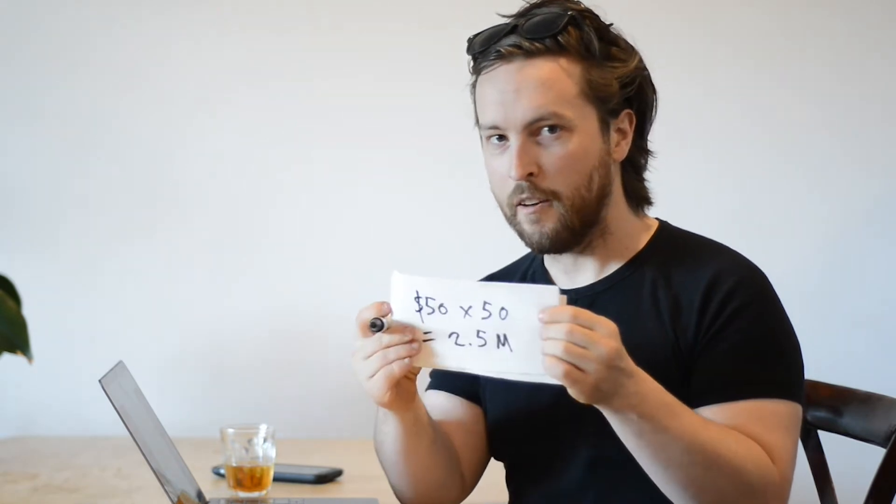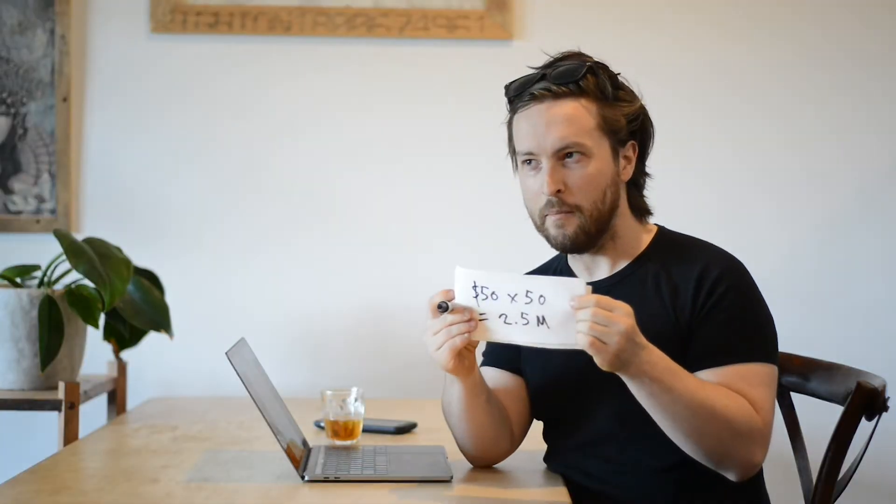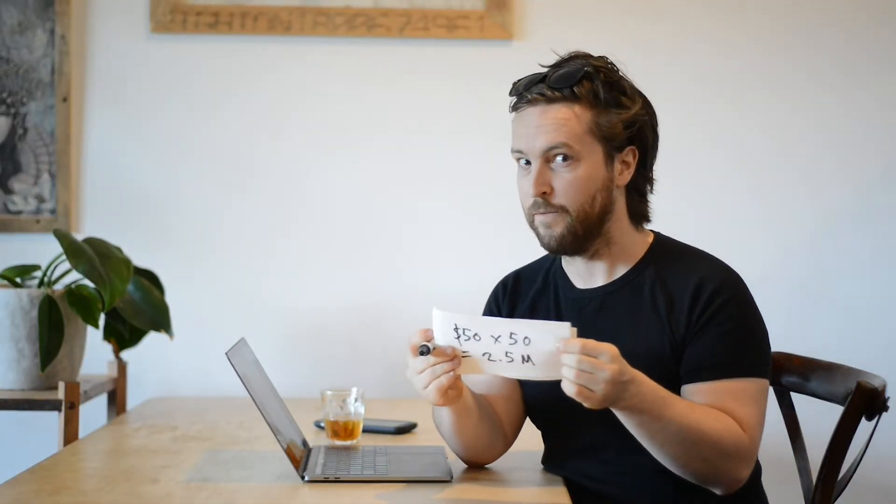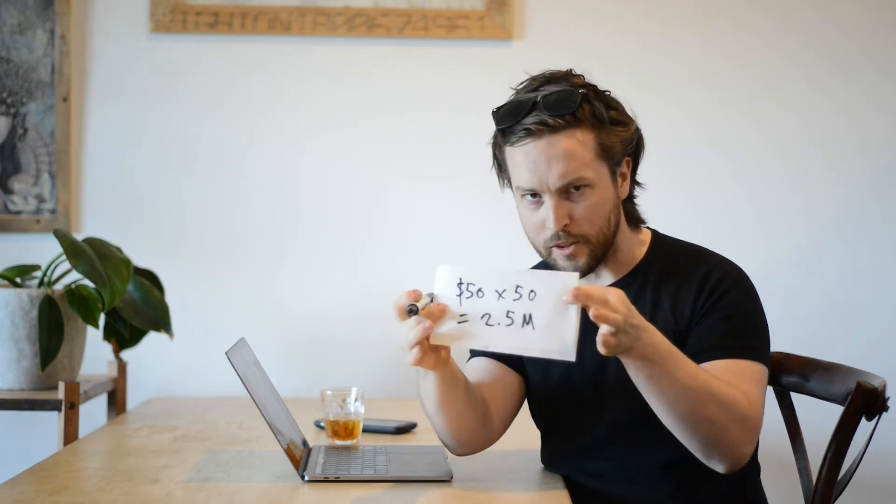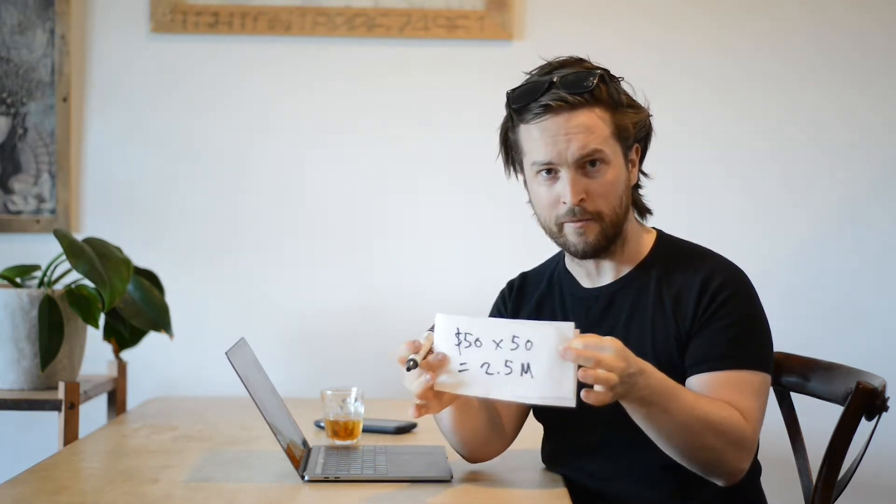The simplest financial model you can make is back-of-the-napkin maths. For example, I'm gonna sell art — 50 pieces of art per year for $50,000 each — equals $2.5 million a year.